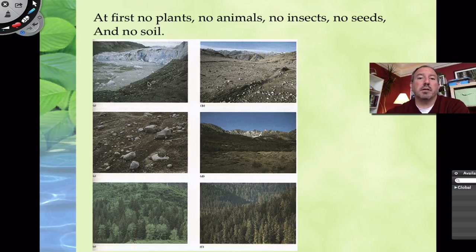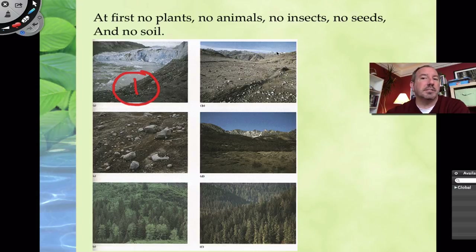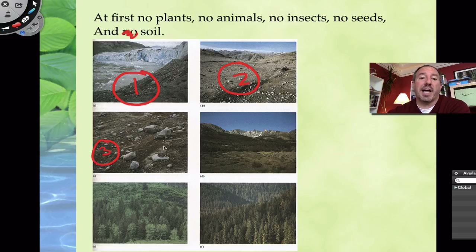Right after the glacier recedes, there's rock and not much soil — no plants, no animals, no insects, no seeds. Then the rocks start to break down and you can start to see some soil accumulating. Some bacteria and lichen appear, maybe even some moss. That makes it more favorable for some primitive plants to come into the area. As soil quality starts improving, you might get grasses to grow, and then some shrubs, providing carbohydrate — primary productivity — which will facilitate the arrival of herbivores.